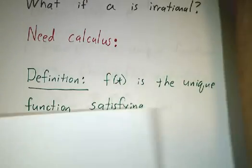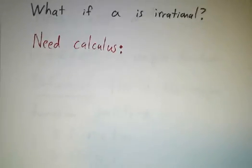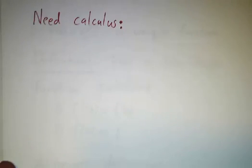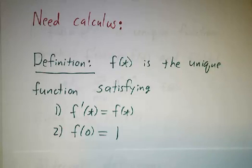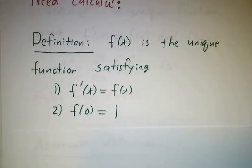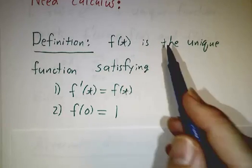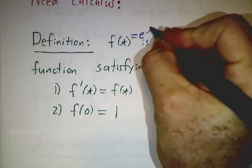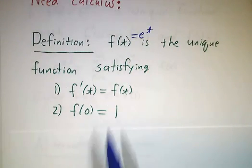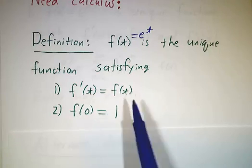We still haven't defined e to an irrational number. And to do that, we need calculus. There are a couple of approaches. The approach I like best is to think in terms of a differential equation. We're going to look at the function e to the t and say f is e to the t is the unique function whose derivative is the original function and whose value at 0 is 1.